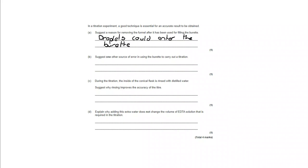Suggest one other source of error in using the burette to carry out a titration. Well, it might be that there's an air bubble left in the tap. They are the two main areas. Think about funnel at the top, air bubble at the bottom, and you've covered all of those bases.